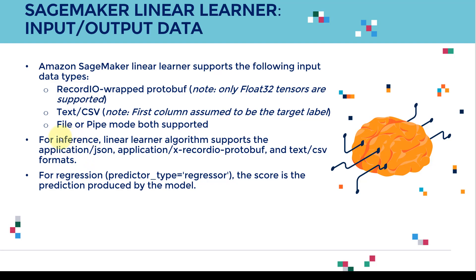Both file mode and pipe mode are supported in Linear Learner. For inference, the Linear Learner algorithm will return output in JSON format. When you run predictions, the output will be in JSON format, and the score is the prediction produced by the model. For regression, please make sure you select the predictor type to be a regressor.